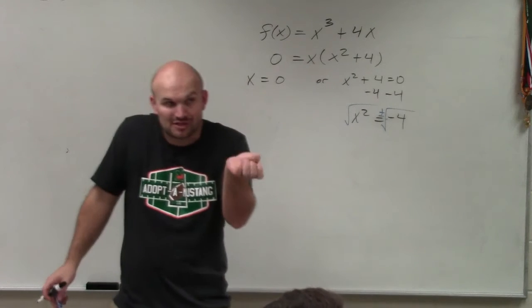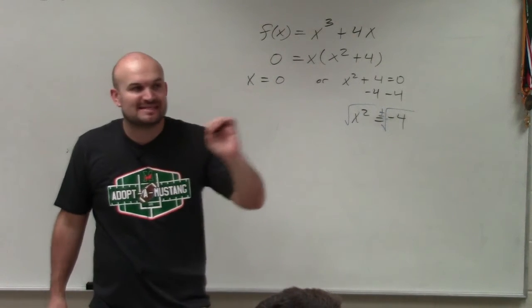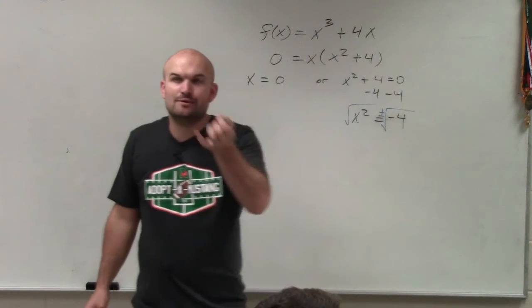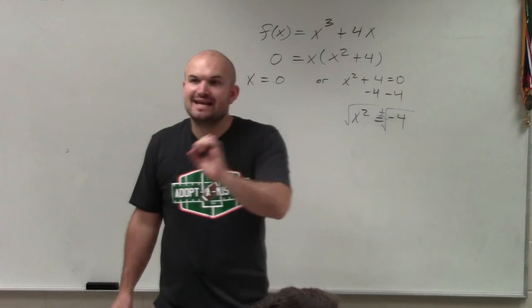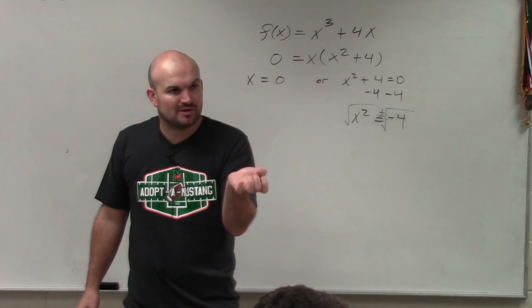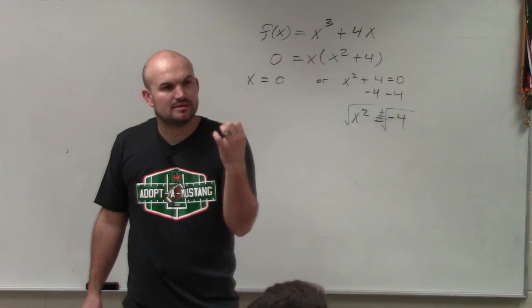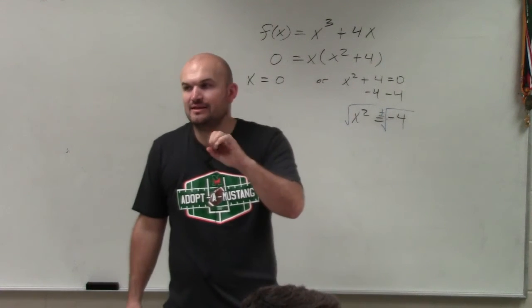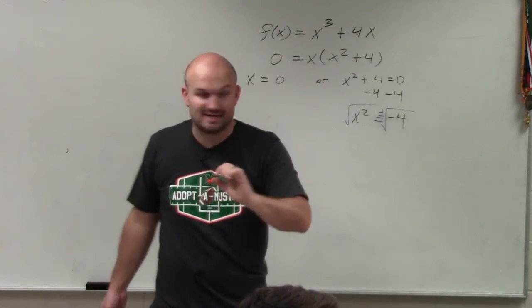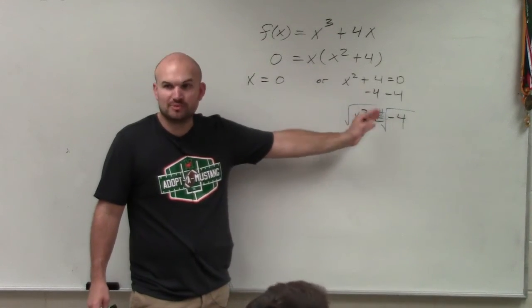I did the plus or minus, right? Irrational numbers come from taking the square root, or at least the irrational roots we're talking about. Irrational roots come from taking the square root of a non-square number. So if you're taking the square root of 2 in the last case, you have to do plus or minus.